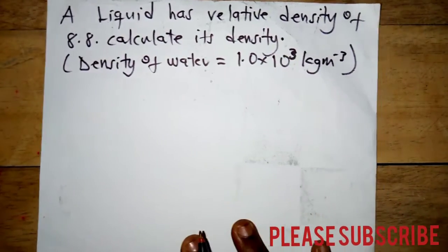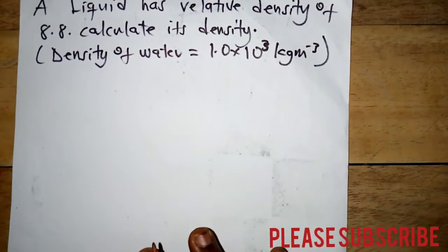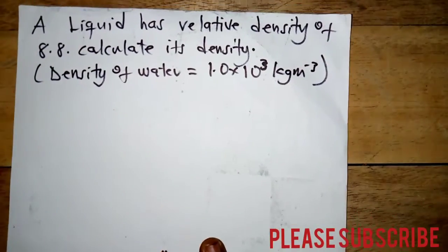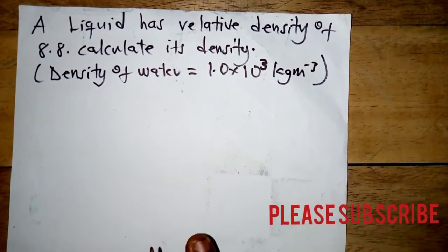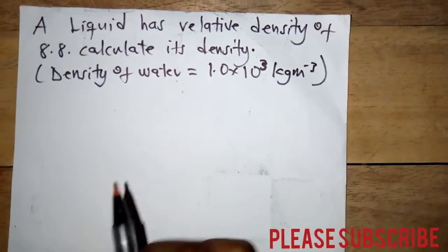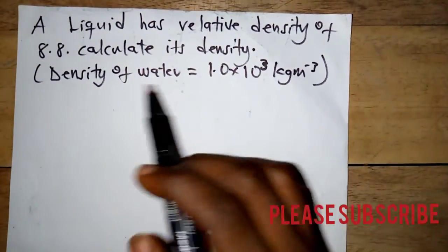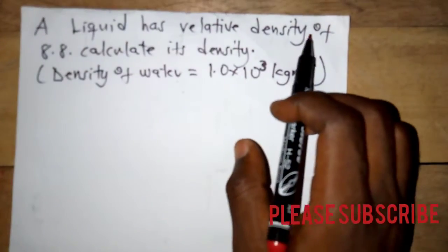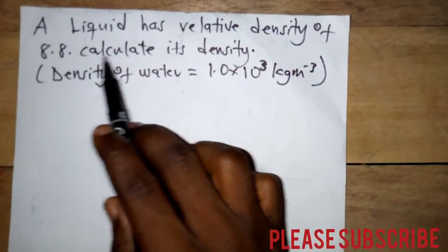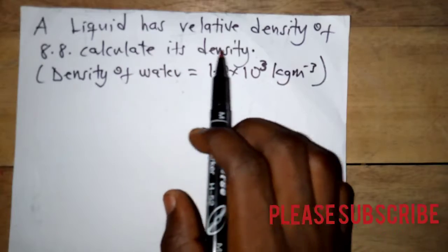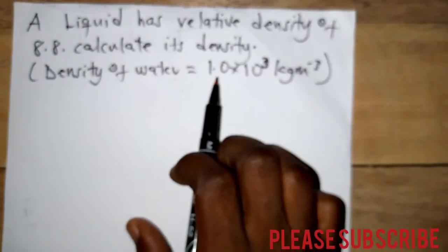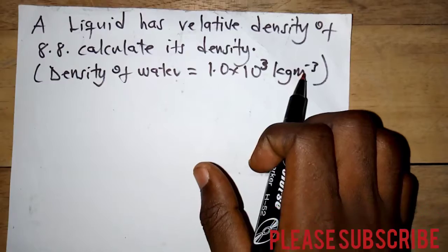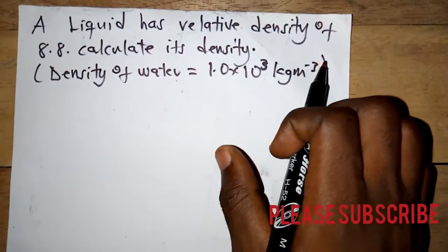Welcome to another section. Today we are doing a question on science, and it's about relative density. A liquid has a relative density of 8.8. We need to calculate the density, given that the density of water is 1 times 10 to the power 3 kilograms per meter cube.